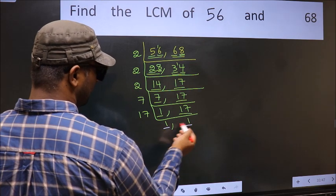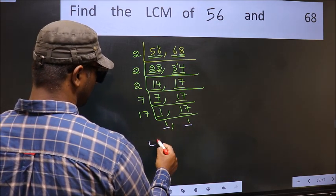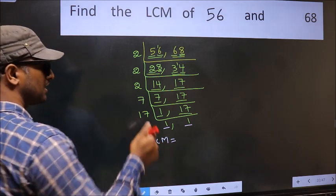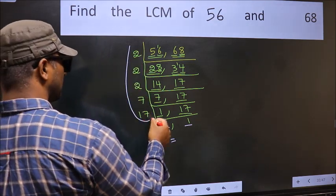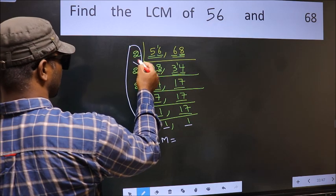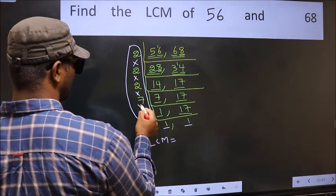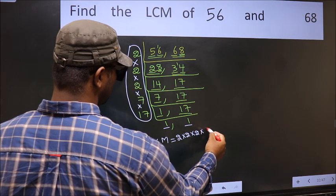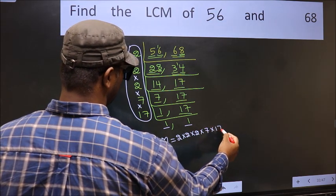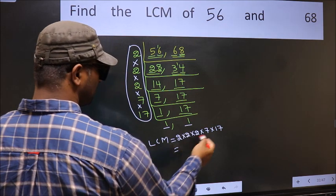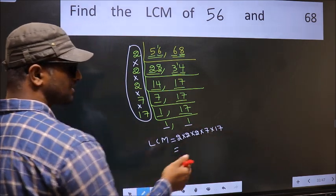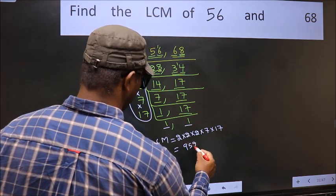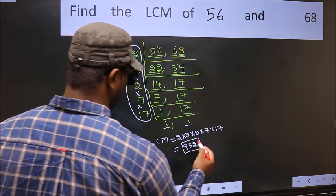We got 1 in both places, so we are done. The LCM is the product of all the divisors: 2×2×2×2×2×7×17. When we multiply these numbers we get 952, which is our LCM.